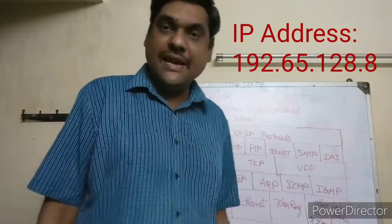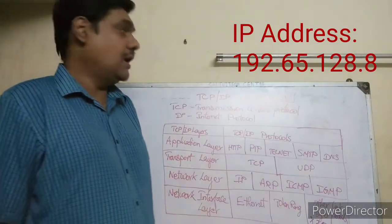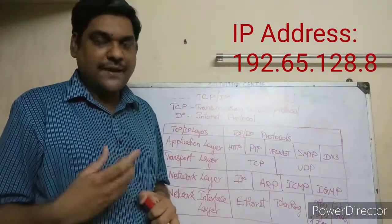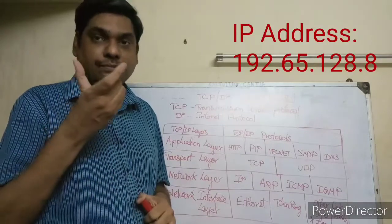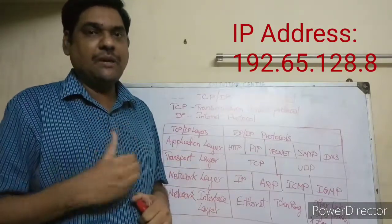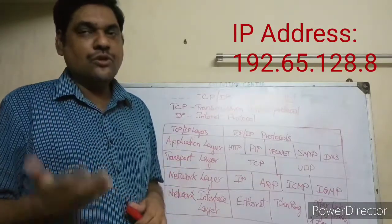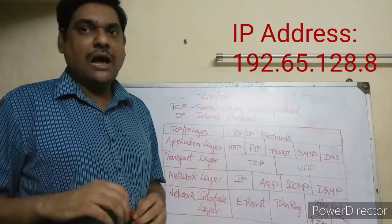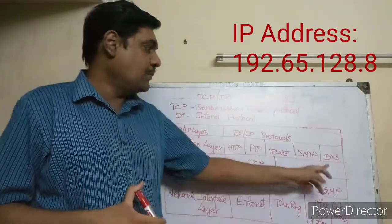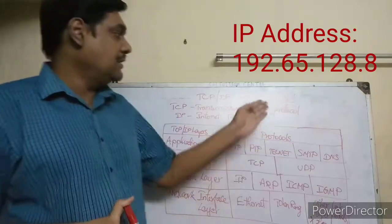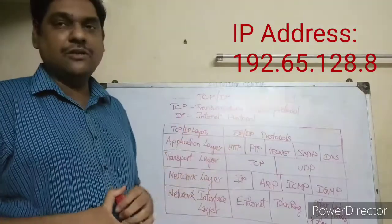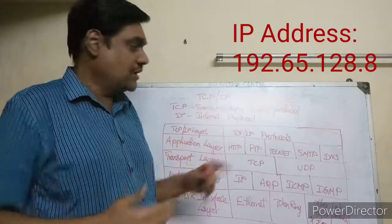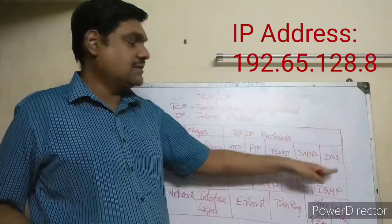DNS — Domain Name System — maps domain names to IP addresses. Since an IP address is just a number and numbers are hard to remember, DNS assigns a readable name like www.google.com to the corresponding IP address number.